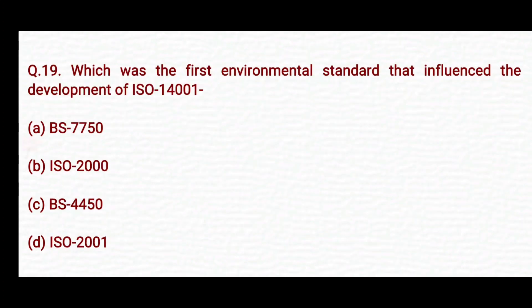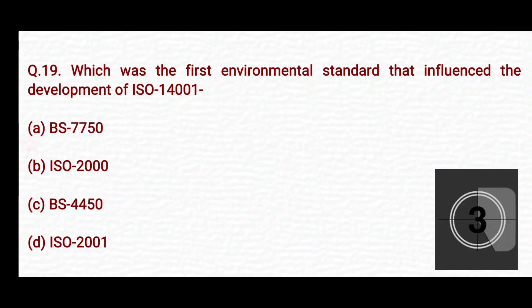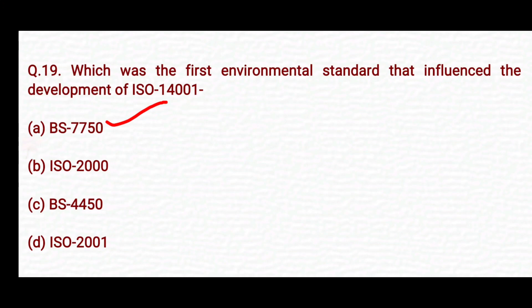Which was the first environmental standard that influenced the development of ISO 14001? Option A: BS 7750. Option B: ISO 2000. Option C: BS 4450. Option D: ISO 2001. The right answer is Option A — BS 7750.